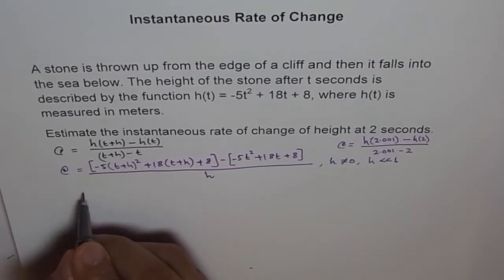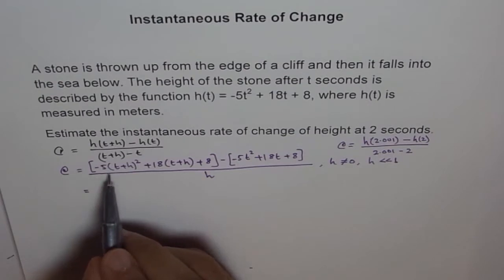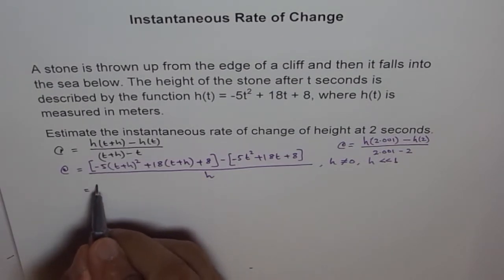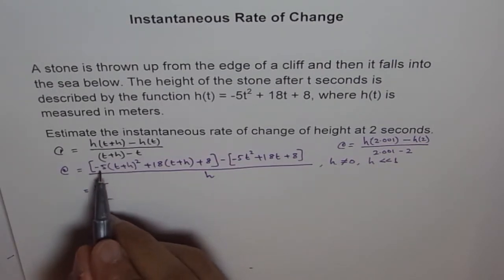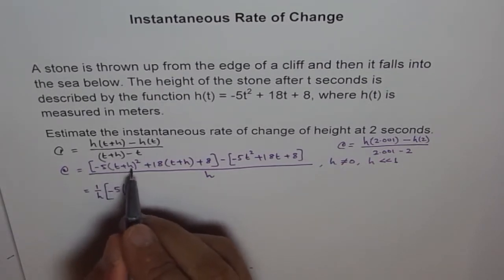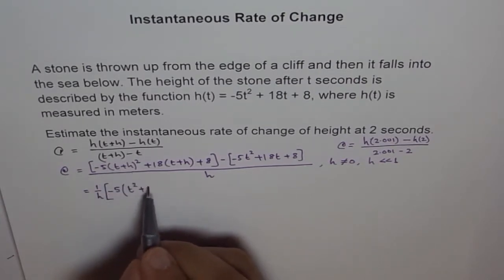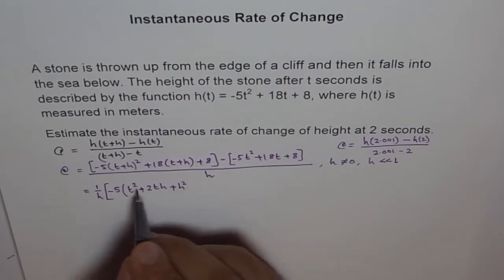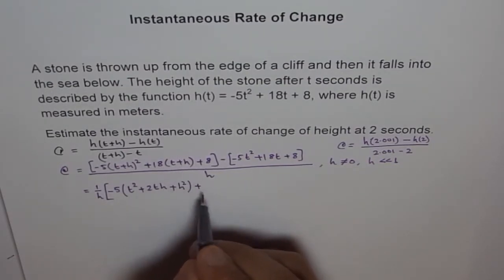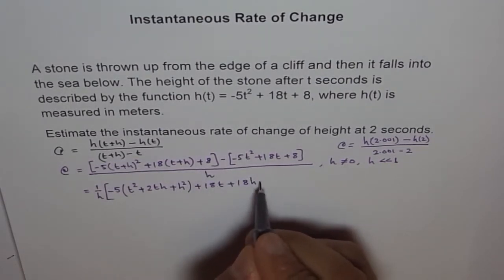Now, here, to continue with this, we will expand this and see what result do we get. So, instead of writing everything over h, I am writing 1 over h here so that I don't have that kind of a fraction thing. And let me put a bigger bracket and then I will expand this. So, it is -5(t+h)² is t² + 2th + h². So, that is the first term and then we have +18t + 18h + 8.